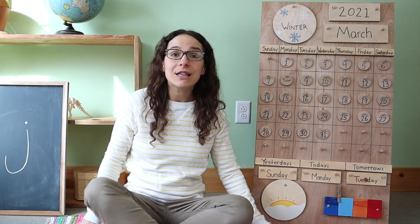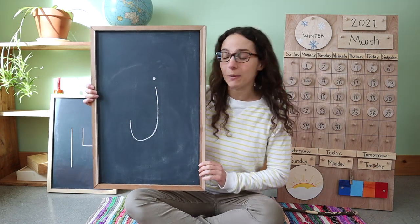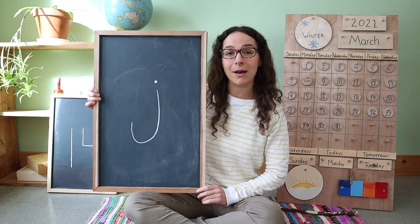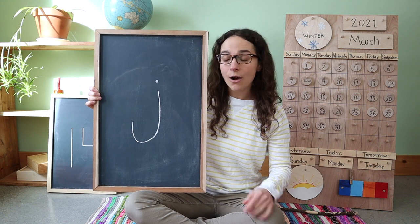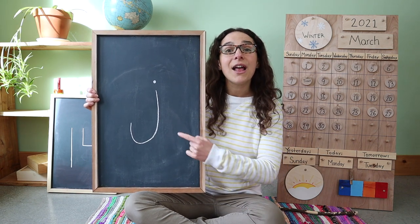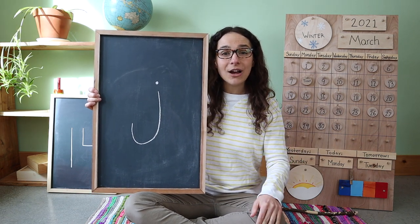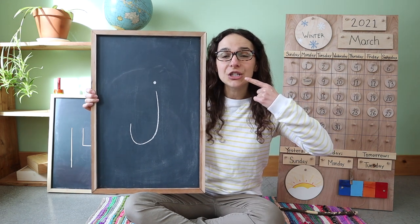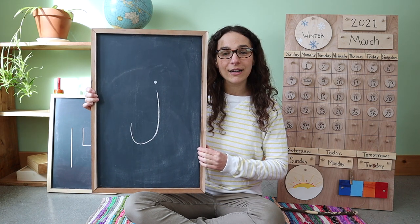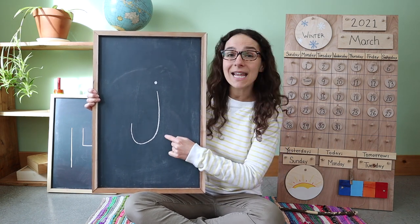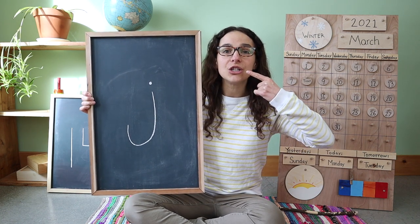Now let's move on to the letter and the number of the week. This week we have a brand new letter. Take a look at this letter — do you know the sound it makes? This letter says J, J, J. Can you make that sound with me? J, J, J. This is a lowercase J, and J says J, J, J.